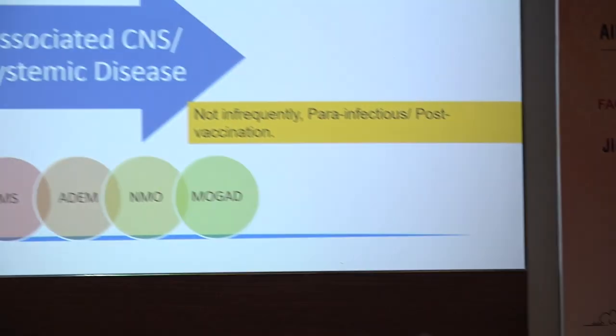We all know that optic neuritis is primarily secondary to demyelination, and it could be either an isolated disease or a clinically isolated syndrome, but more often than not there is some associated CNS disease. The most common etiologies being multiple sclerosis, acute disseminated encephalomyelitis, neuromyelitis optica, and MOG-associated demyelinating disorder. In India, we should never forget the para-infectious and post-vaccination demyelinations that are quite common.